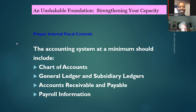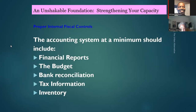At a minimum, the accounting system should include a chart of accounts, general ledger and subsidiary ledgers, accounts receivable and payable, and payroll information — QuickBooks does all of this. The accounting system should also include financial reports, budget, bank reconciliation, tax information, and inventory.